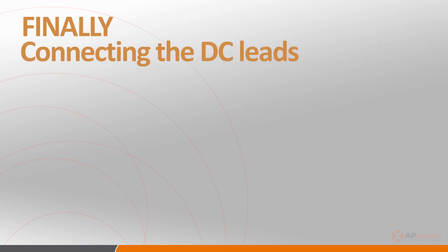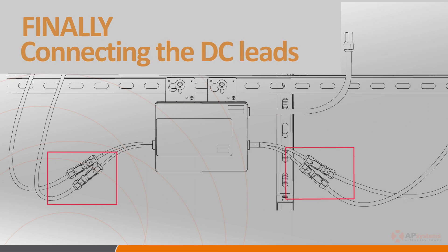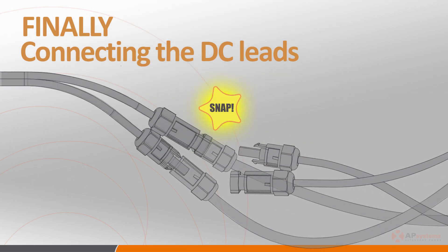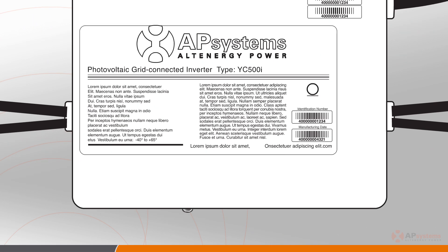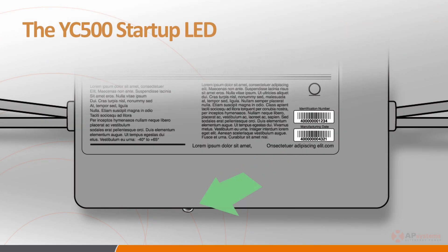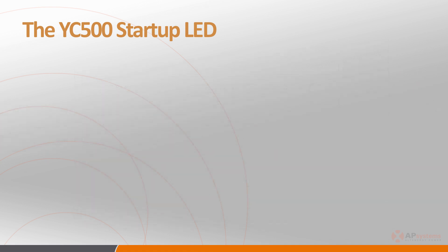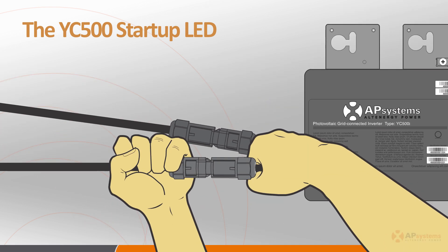Place the PV modules on the racking system. Connect the DC leads from each of the PV panels to the microinverters, making sure that the connectors are securely snapped into place. The LED on the microinverter will flash green three times when DC power is first applied, indicating a successful connection. This startup indication only happens when the DC power is applied to the first side of the connected inverter. Check the DC connectors if you don't see the green startup LED flash.